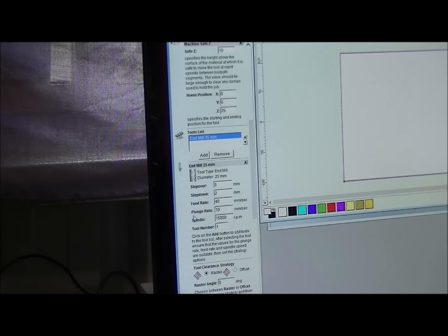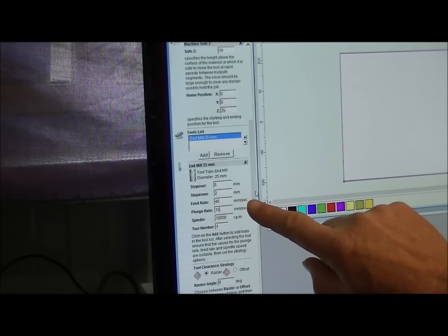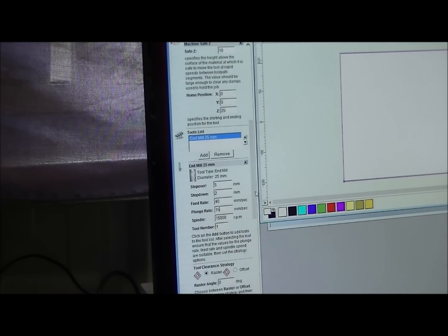Feed rate 40 is okay. Plunge rate, we can probably take it up to 15. But in Mach 3, I normally start off at 50 percent. So that will be 7.5 millimeters per second. Now that's the thing. All the measurements here, the feed rates, the plunge rate, is millimeters per second. Now in Mach 3, they're millimeters per minute. So obviously you have to times by 60 to be able to get the same feeds in both programs.